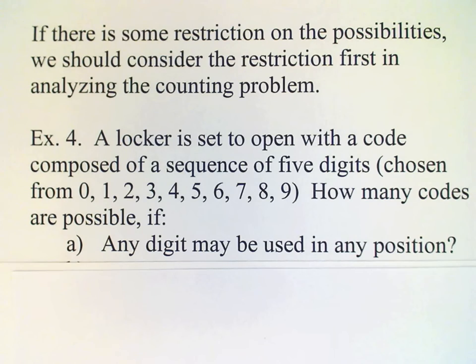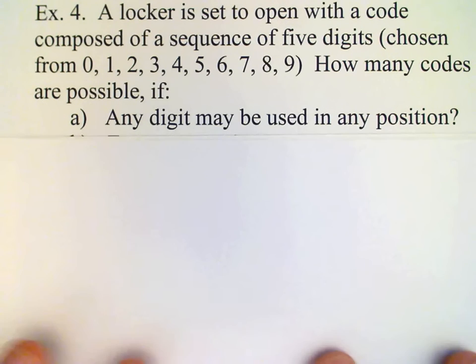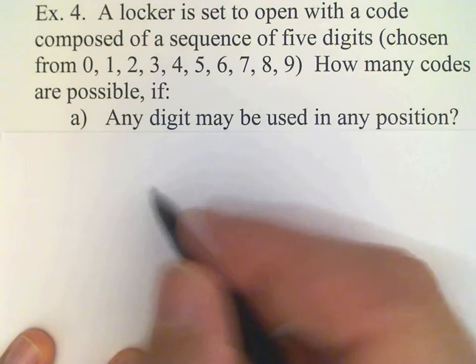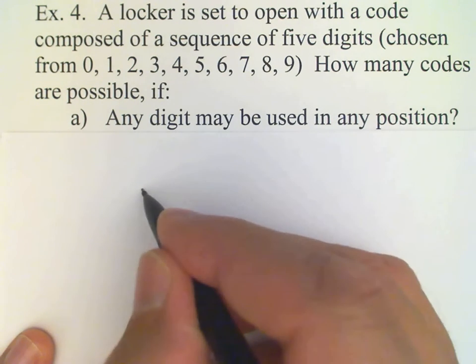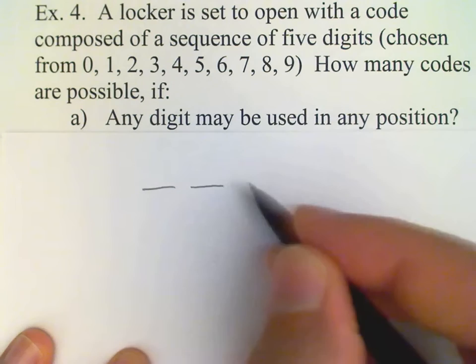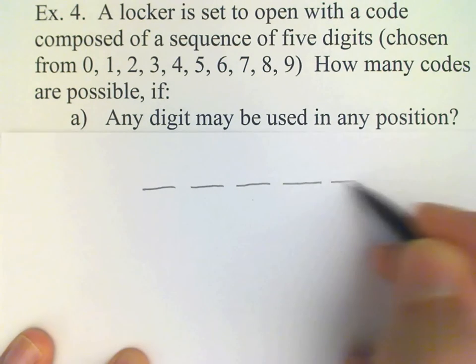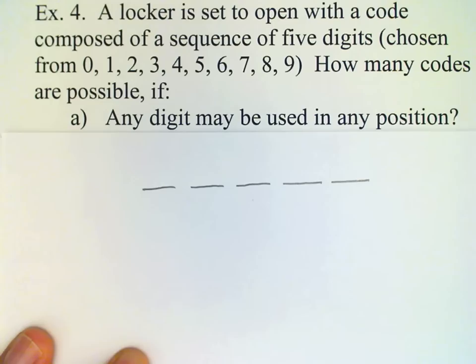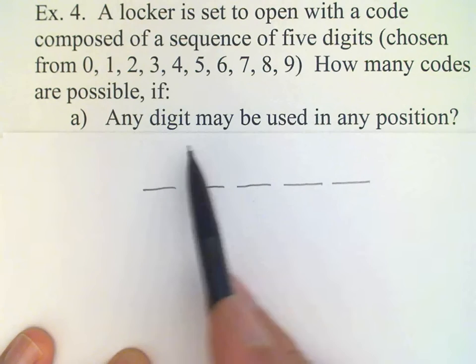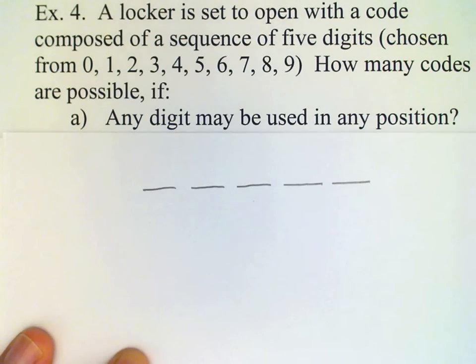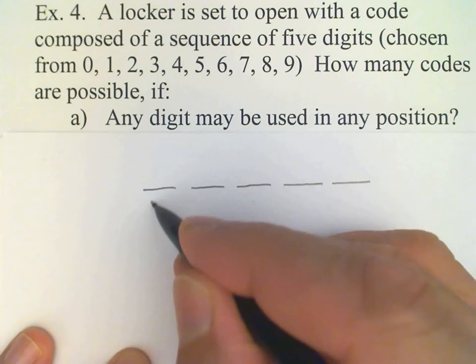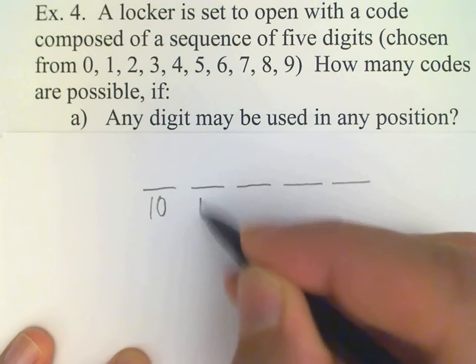Basically this is just filling slots. So we have five slots to fill here and we have to think about the number of different ways that we can fill these slots. If there is no restriction on the possibilities, then there's ten digits that can go in each of the slots.